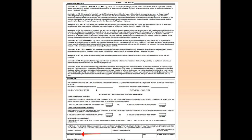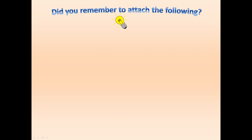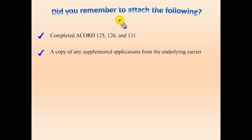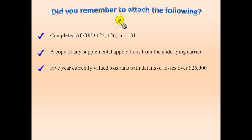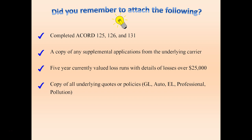Let's review a quick checklist of the most vital items needed for a complete submission. You'll need to attach the Accord 125, the 126, and the 131, a copy of supplemental applications from your underlying carrier, 5-year hard copy loss runs, copies of all underlying quotes or policies, current MVRs, and the make, model, and VIN of all power units.